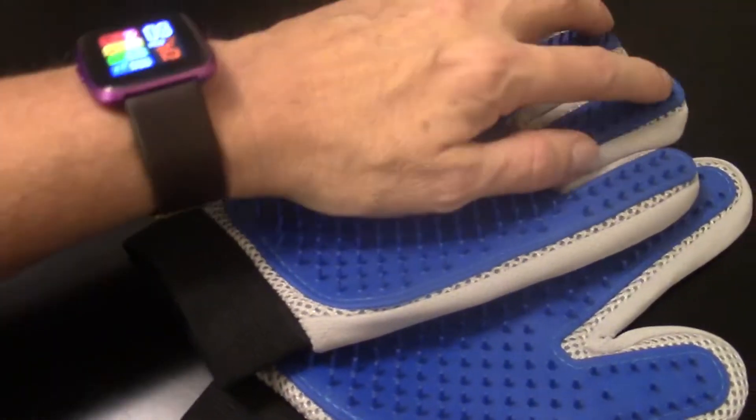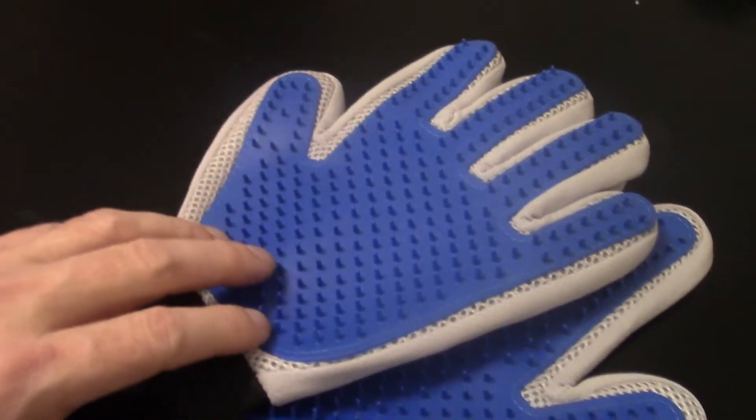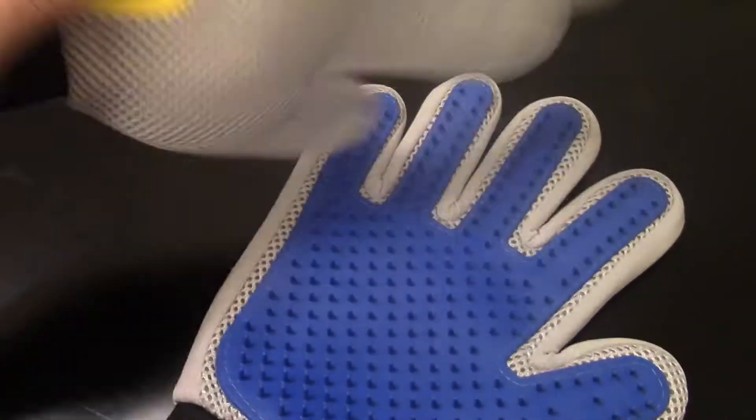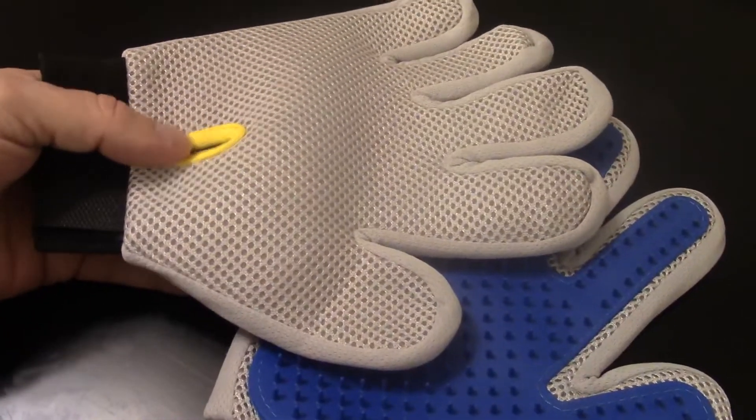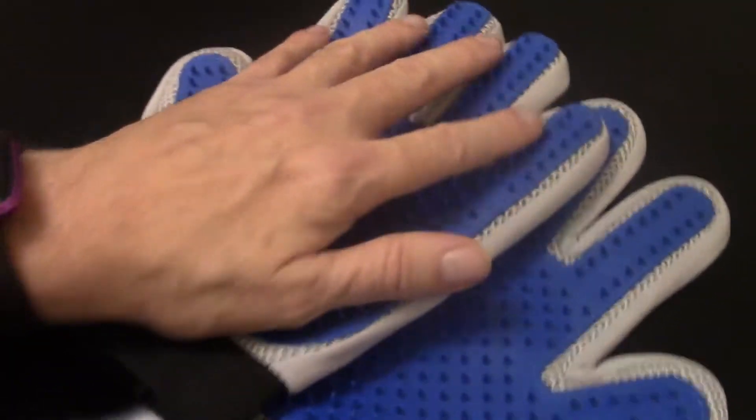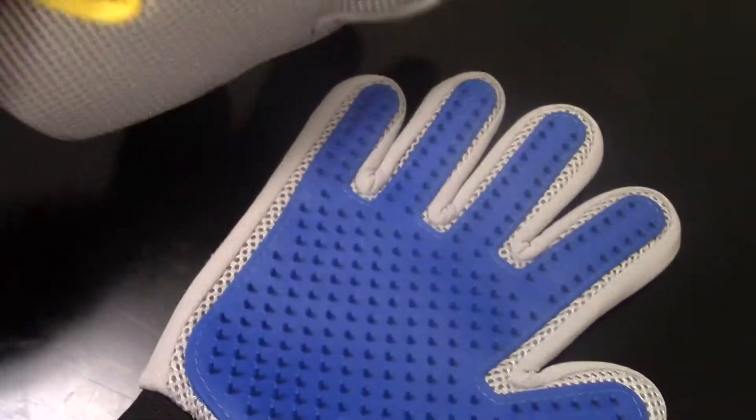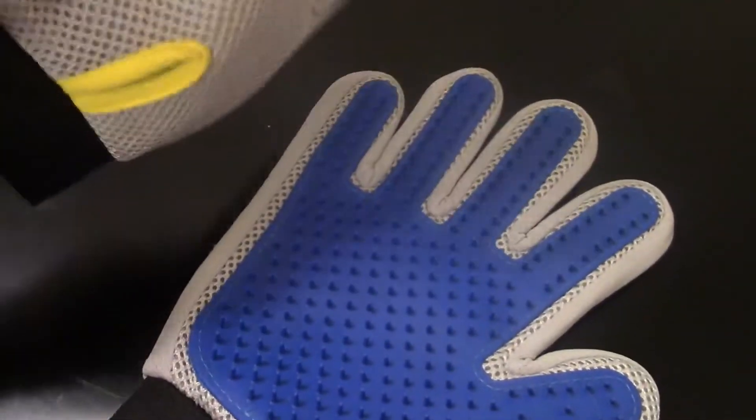When you're done, especially if you have a lot of hair in it, you just kind of rip the hair off in one mat. It works pretty well. If you need to, you can hand wash these in soap and water. It's not recommended to put them in the washing machine. Just hand wash them and let them lay out to dry.